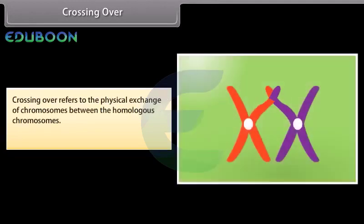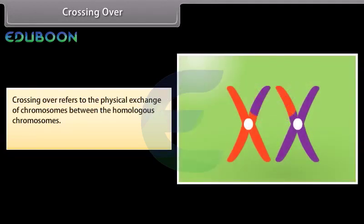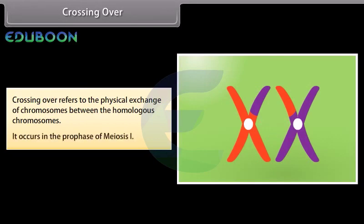Crossing over refers to the physical exchange of chromosomal segments between homologous chromosomes. It occurs in the prophase of meiosis 1.